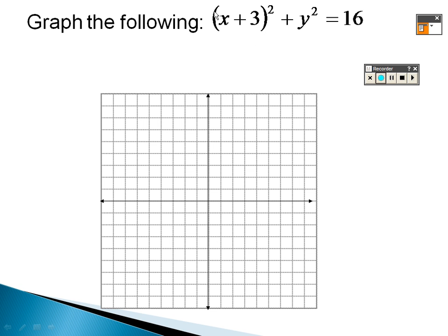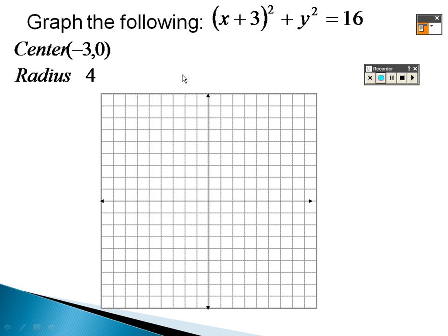For this circle, remember the center uses opposites: positive 3 becomes negative 3, and since there's just y² the y-center is 0, so center is (−3, 0). The radius is the square root of 16, which is 4. From the center, go 4 in each direction, mark the points, connect them, and there's your circle.